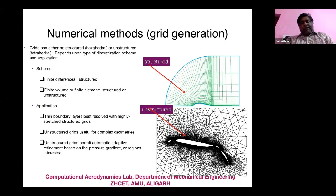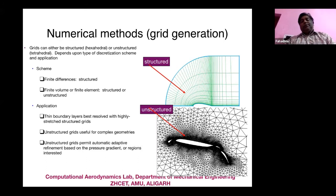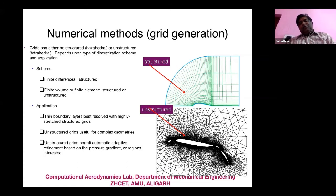For structured grid generation, here is an example of a C-grid on an airfoil — a body-fitted grid where the physical domain is transformed to a simple computational domain of [0,1]×[0,1]. In the unstructured approach, the connectivity is not predetermined — if you know node number 2, node number 3 is not necessarily adjacent; it may lie somewhere else. In structured grids, knowing indices i and j immediately tells you which physical point is neighboring — this is known a priori.